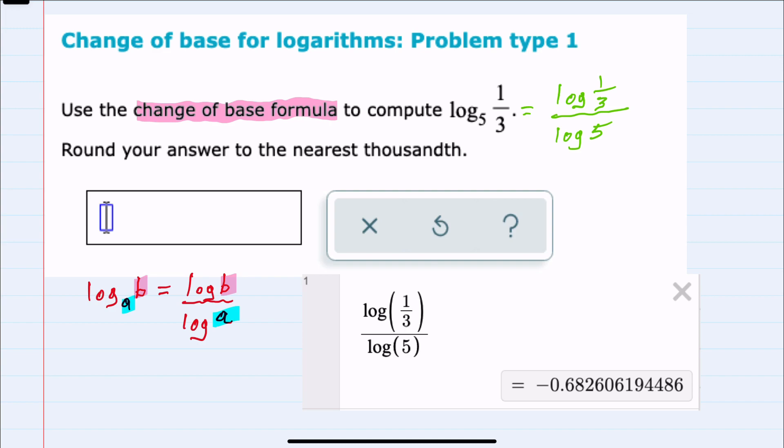Since we are rounding to the nearest thousandth place, we will look at the digit behind the thousandth place. Since it is a 6, I will need to round up, so this would be negative 0.683 with the rounding to the thousandth place.